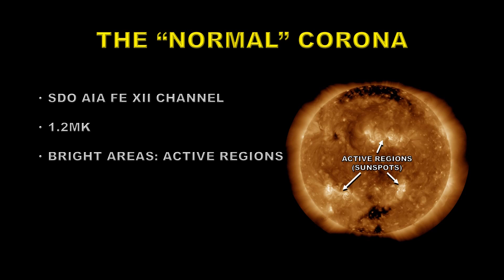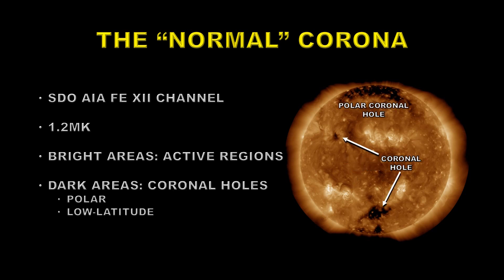When you look at one of these images, you see bright areas — those are active regions. They are basically above sunspot groups, and that's where most of your flares and other activity comes from. The dark areas you see here are two types: there's the polar coronal hole — you can see the northern polar coronal hole here quite well because the sun is tilted slightly towards us in the north.